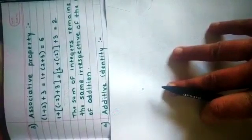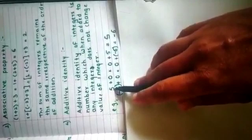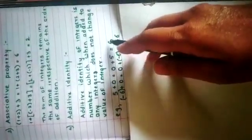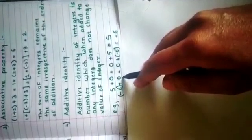Now, we will see about additive identity. What is this additive identity? Additive identity of integers is a number which, when added to any integer, does not change the value of that integer. For example, 5 plus 0 equals 5, and 0 plus 5 equals 5. Similarly, minus 6 plus 0 equals 0 plus minus 6 equals minus 6. So, additive identity is 0, and the additive identity of integers is 0.